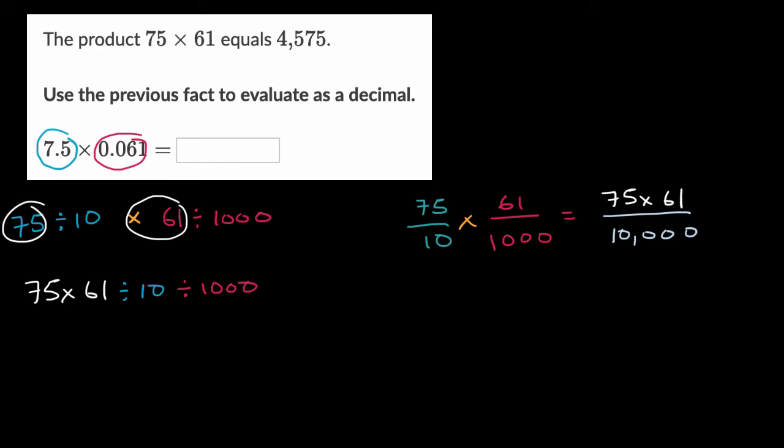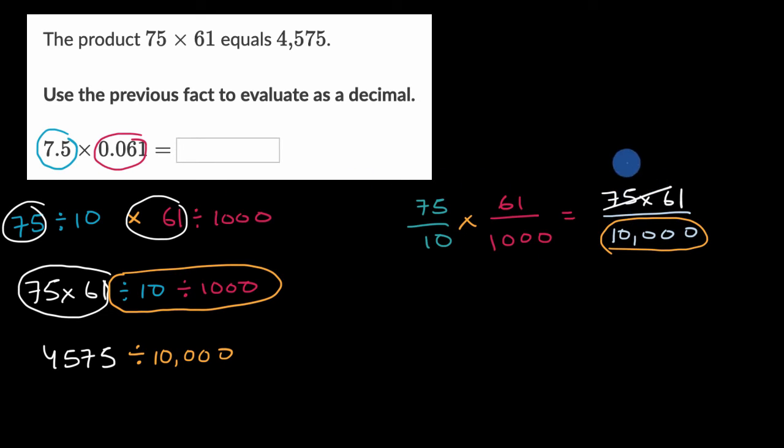Now on the left-hand side right over here, they told us what this is. It's 4,575. So it's 4,575 divided by 10, and then divided by 1,000. Well if I divide by 10 and then I divide by 1,000, that's equivalent to dividing by 10,000. And you could see that over here, we're dividing by 10,000 as well. And the 75 times 61, this is 4,575.